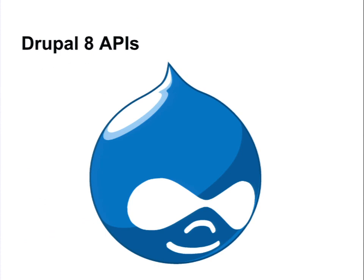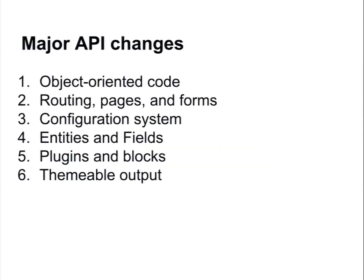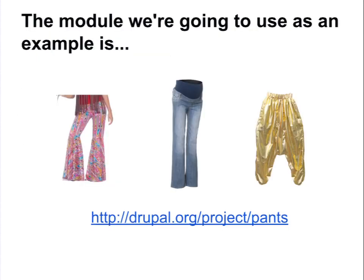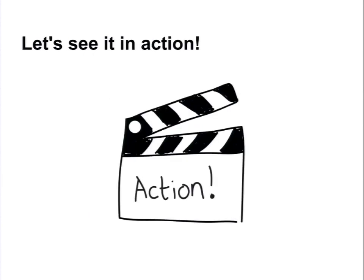Drupal 8 APIs is the next section. There are several major API changes that happen in Drupal 8: object-oriented code, routing, pages and forms, and so on. We're going to use pants as an example of this — it's a very silly module, but it happens to exercise all of these APIs to show you how that works. So I am going to hand it over to Alex, who can talk to you more about that.